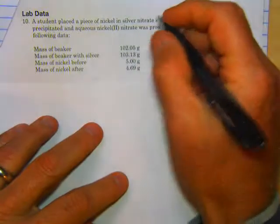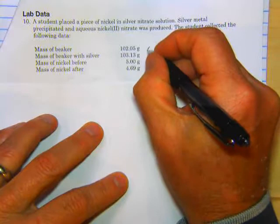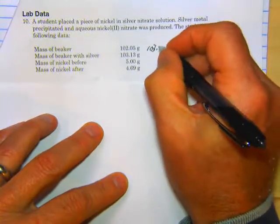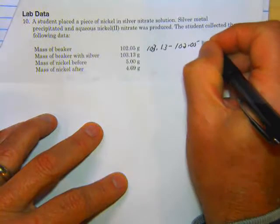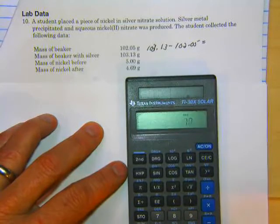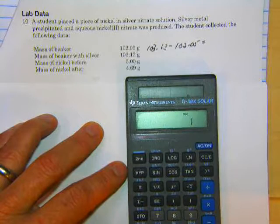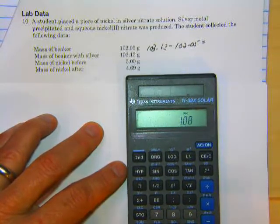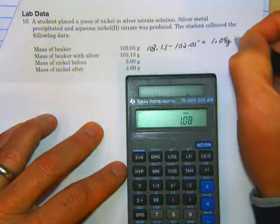We're going to need the mass of silver. So the mass of silver is going to be the mass of silver and the beaker, 103.13, minus just the beaker. So we can go ahead and do that. 103.13 minus 102.05. And that's 1.08 grams of silver.